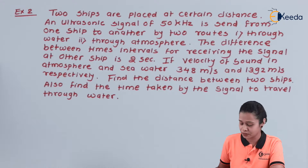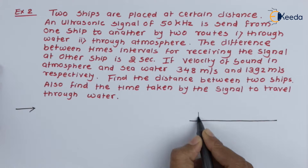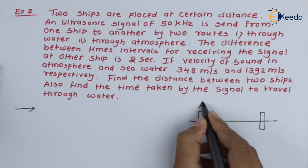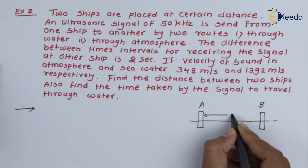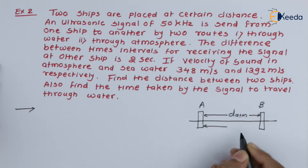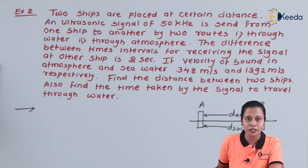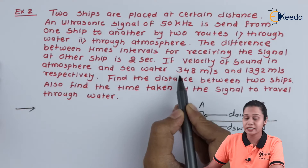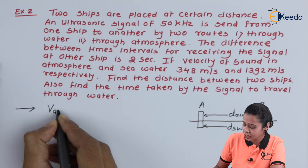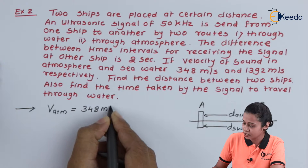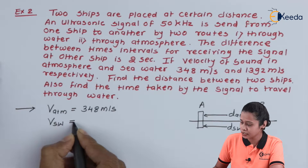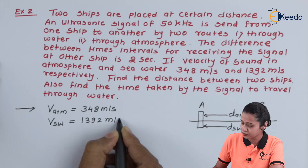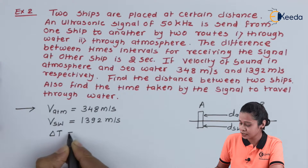Let us visualize the condition first. We have two ships, A and B, placed at a certain distance. This is the atmosphere route and this is the distance in seawater. The ultrasonic wave passes through the atmosphere and through the seawater. Velocity in atmosphere V_A = 348 m/s, velocity in seawater V_SW = 1392 m/s, and the time interval delta T = 2 seconds.